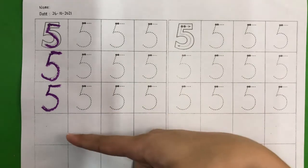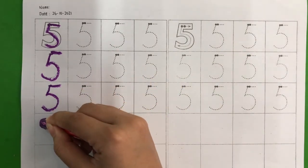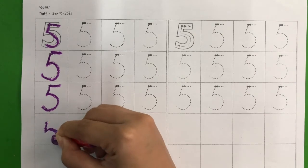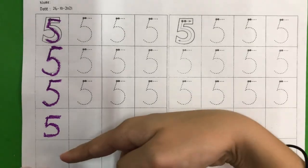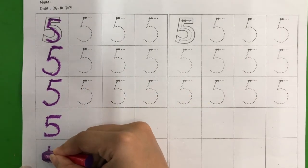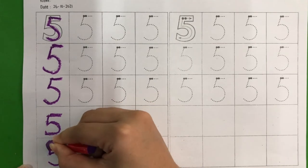Now we go down to the box. Go down, draw a big curve, and close it. Good. Now the next one. Go down, draw a big curve, and close it.